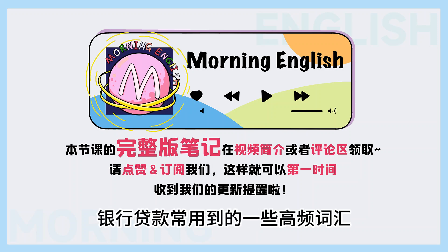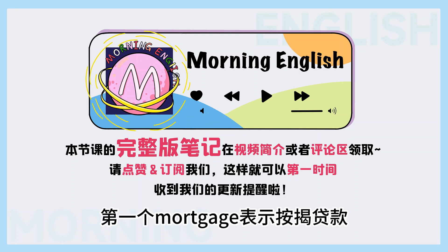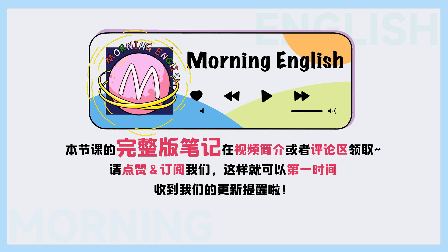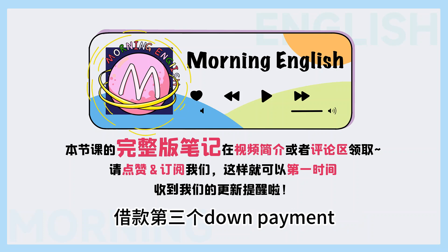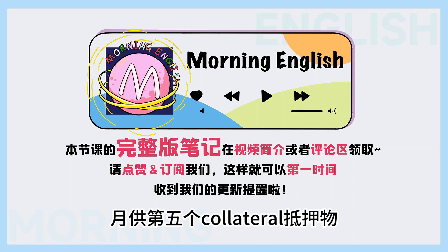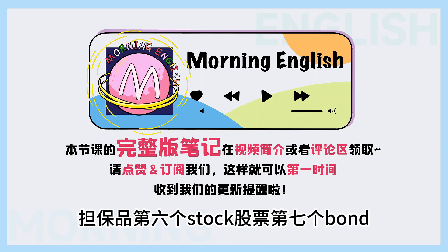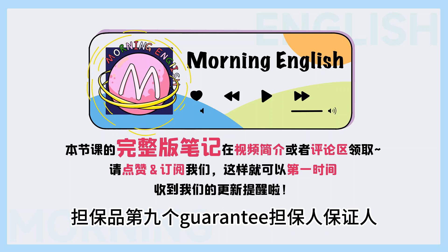好了，今天我们讲到了银行贷款常用到的一些高频词汇，一起来复习一下。第一个，mortgage，按揭贷款、房屋抵押贷款。第二个，loan，贷款、借款。第三个，down payment，首付款。第四个，payment，月供。第五个，collateral，抵押物、担保品。第六个，stock，股票。第七个，bond，债券。第八个，guarantor，担保人、保证人。